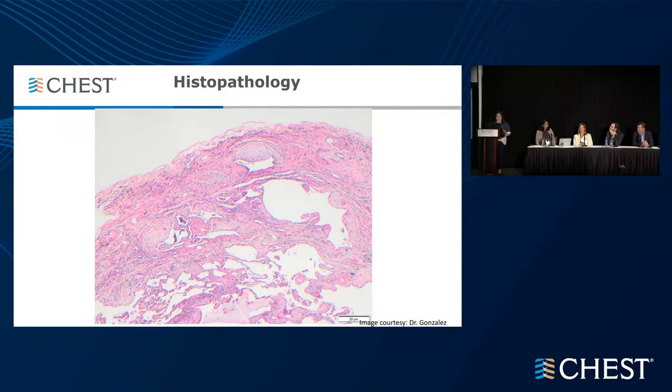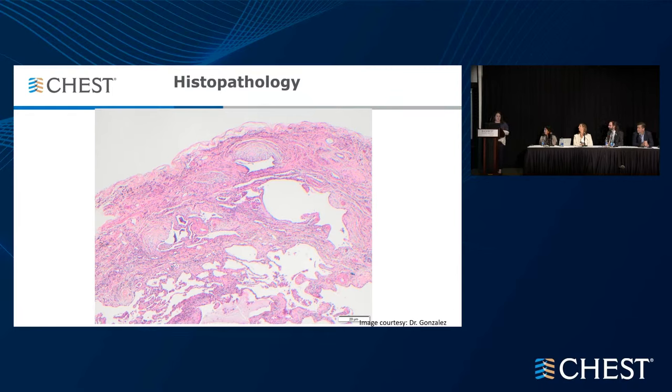Going back to our patient: in a patient who has probable UIP, there's about an 80% chance that histopathology will show UIP. This is an example biopsy — a classic UIP pattern. There's the temporal heterogeneity we expect with UIP: microscopic honeycomb change, old fibrosis, some alveoli that look probably mostly normal, and multiple examples of fibroblastic foci or new fibrosis. There are no granulomas, no inflammation — all the elements of temporal heterogeneity are present. Subpleural in nature — this would be a UIP biopsy.